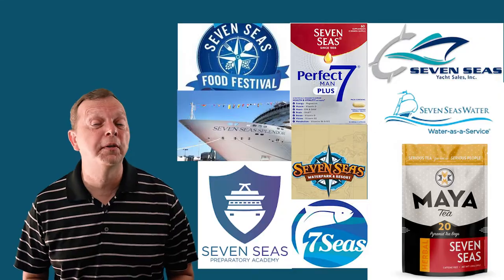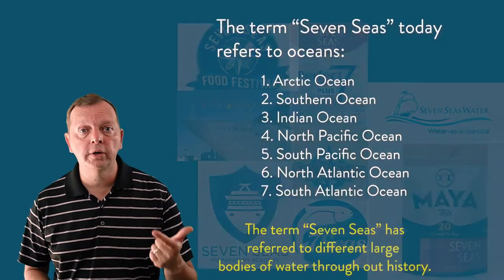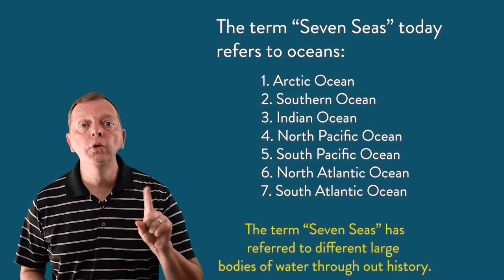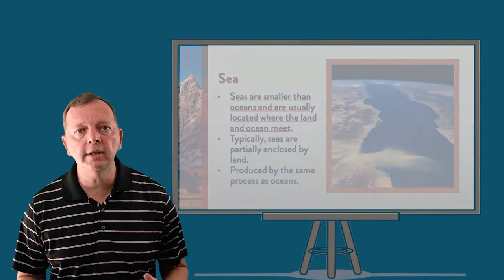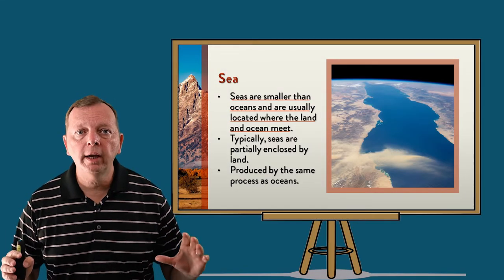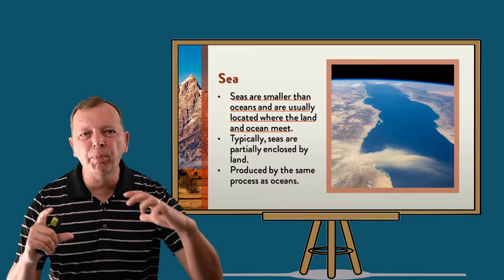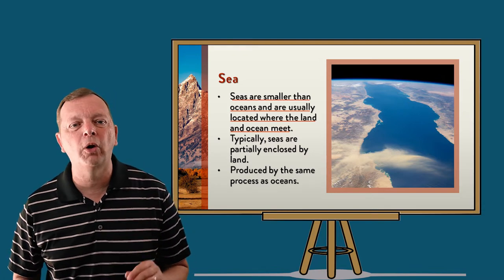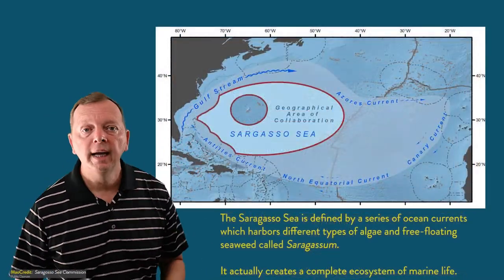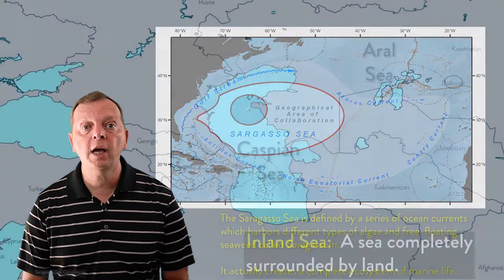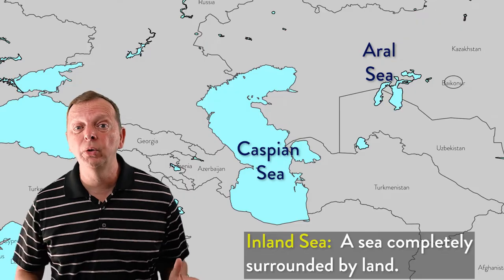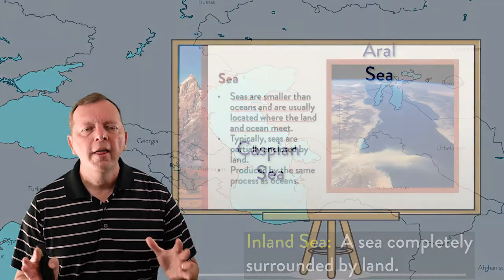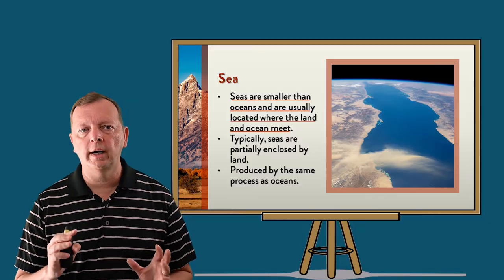Then there are the seas. You might have heard the term 'the seven seas' before — in reality they don't actually refer to seas at all. The seven seas are the Arctic, Southern, and Indian Ocean, along with the North and South Pacific and the North and South Atlantic. But there are actually over 50 seas in the world. A sea is defined as being smaller than the ocean and located where land and ocean meet, typically partially enclosed by land. But some geography terms are hard to follow — for example, the Sargasso Sea in the Atlantic doesn't have land boundaries at all, and the Caspian and Aral Seas in Central Asia are not connected to the ocean, as they are totally landlocked. Generally, think of seas as a portion of an ocean that comes into contact with land.